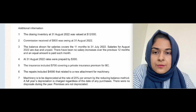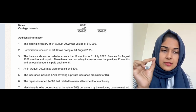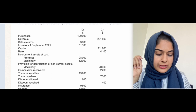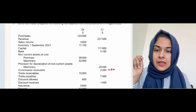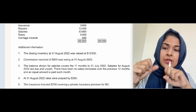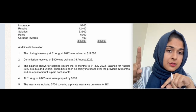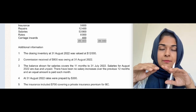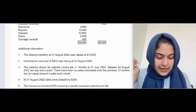When you solve the adjustment first, you have all the work ready. 800 was owing at 31st August 2022. Whether it's income owing or expense owing, you add the owing amount to the trial balance value. Owing means the service has been given, so you record the income — add the owing income here.